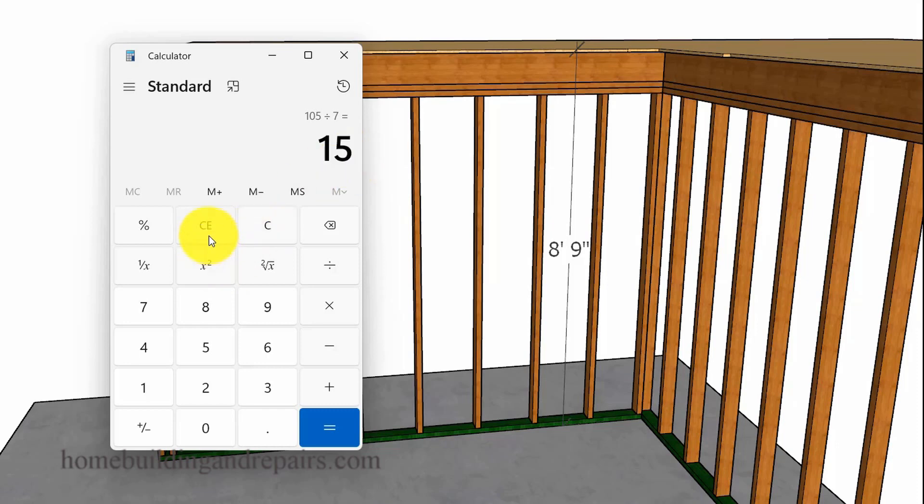However, since most building codes allow us to have a seven and three quarter inch riser, I'm going to try dividing this by 7.5. And that brings us to 14 risers. And keep in mind that this particular stairway was designed specifically for seven and a half inch risers and 14 risers with 13 steps.